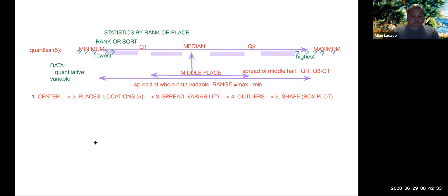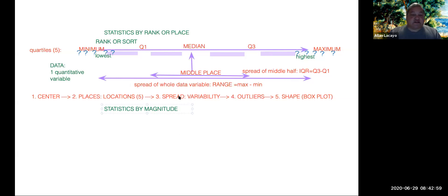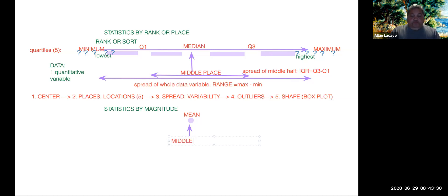The second part of chapter three looks at statistics by amount — statistics by magnitude, by the actual value of the numbers in the data, rather than by where they rank or place. In this context, values are typically measured around the middle, and the statistic that measures the middle value is called the mean. The mean measures the middle value — not the middle place, but the middle value. Around the mean we then measure variation or spread.